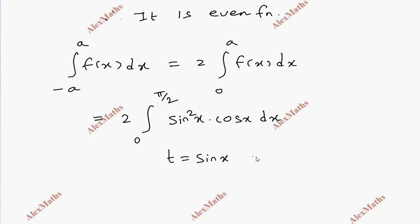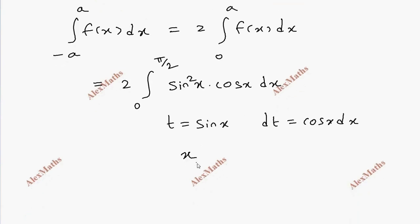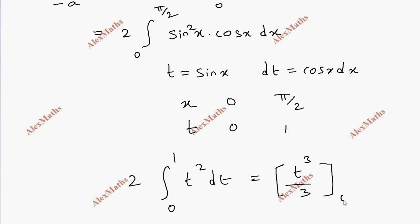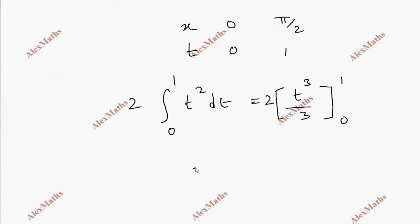Let t = sin x, then dt = cos x dx. Substituting the limits: when x = 0, t = sin 0 = 0; when x = π/2, t = sin(π/2) = 1. The integral becomes 2 times the integral from 0 to 1 of t² dt = 2 · [t³/3] from 0 to 1 = 2 · (1/3) = 2/3.